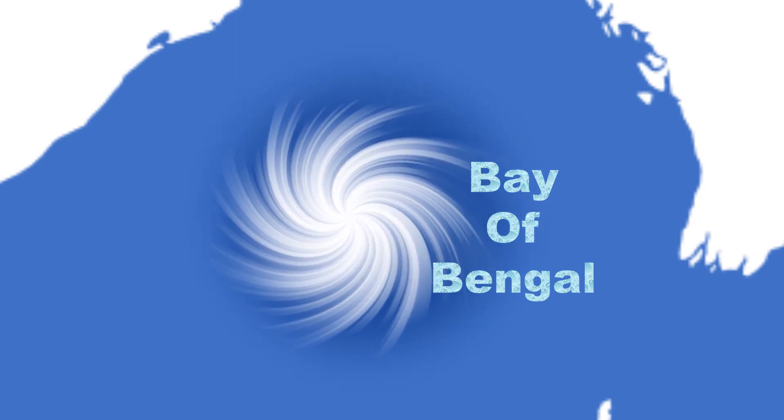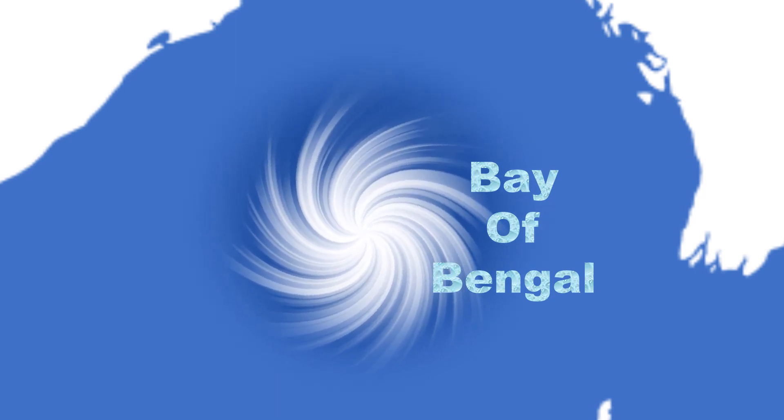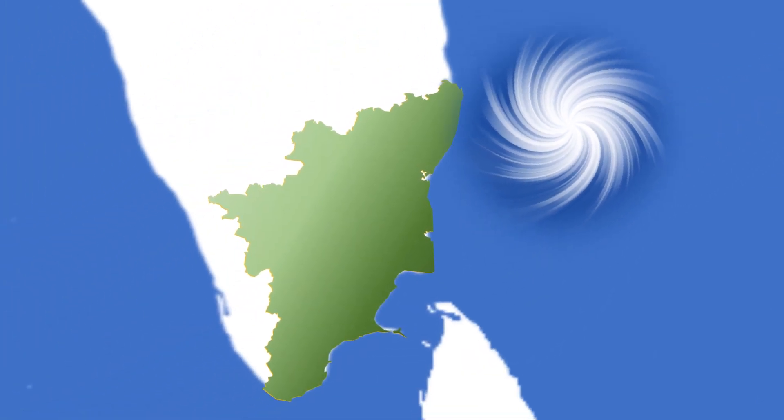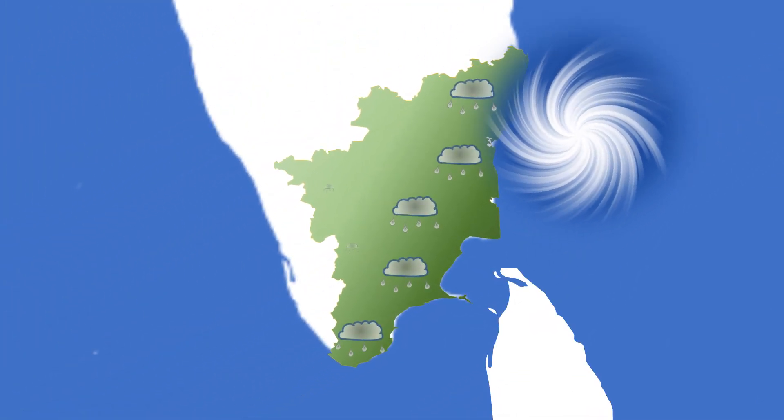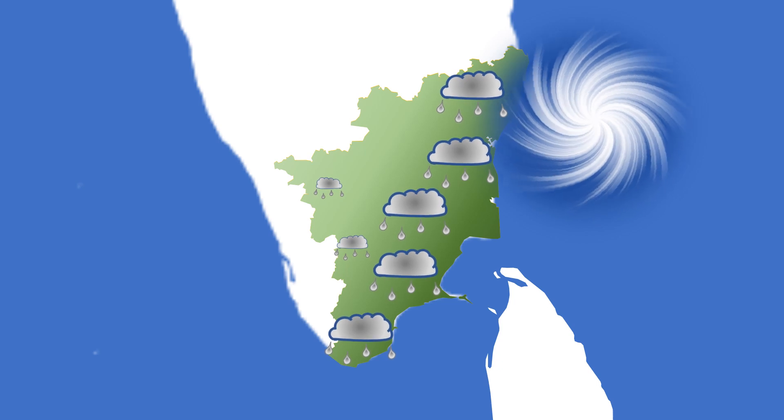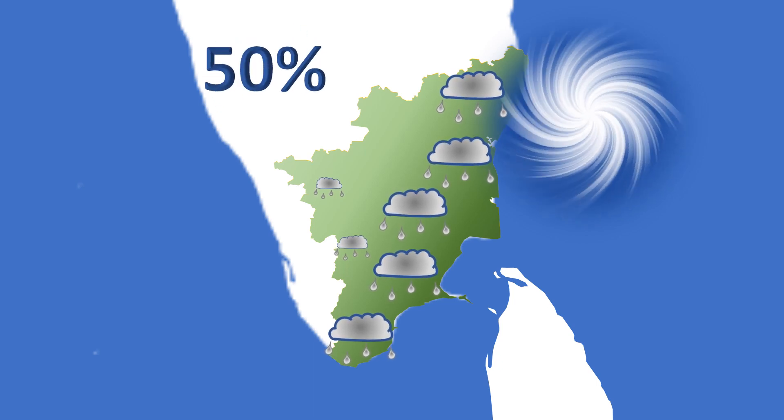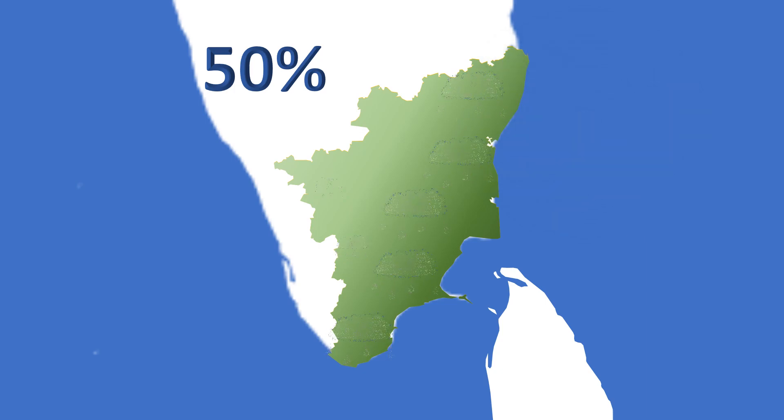Cyclones are large air masses that rotate around a center of low pressure. During the month of November, they originate in the Bay of Bengal. Almost the whole of Tamil Nadu, especially its coastal areas, benefit much from these monsoons. Nearly half of its annual rainfall is received due to these cyclones.